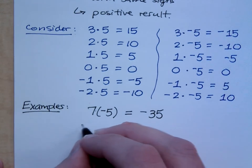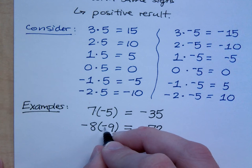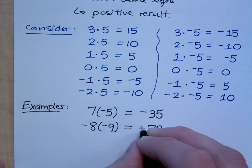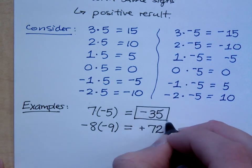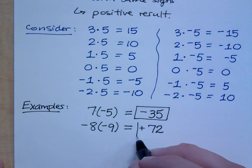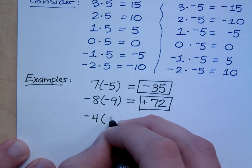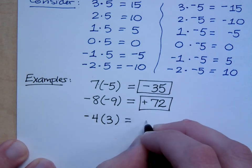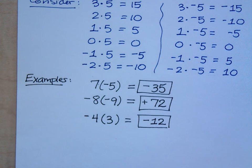What if I have negative eight times negative nine? Eight times nine is 72, but is the answer positive or negative? Positive — negative times negative equals a positive, so that's positive 72. What's negative four times three? Negative 12 — these guys have different signs, so your result is negative. That's the only thing you need to worry about: different signs means negative, same signs means positive.